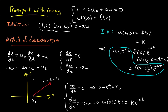So to summarize: u(x, t) equals f(x minus ct) times e to the minus at. We found, via the method of characteristics, that the rate of change of u along a characteristic line was given by minus au, while the characteristic lines were given by dx/dt equals c. Using that information plus an initial condition, we found the general solution.